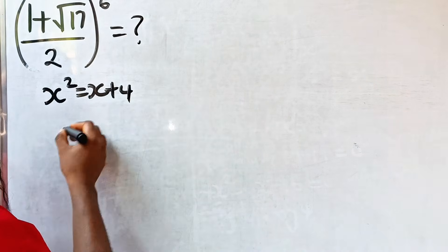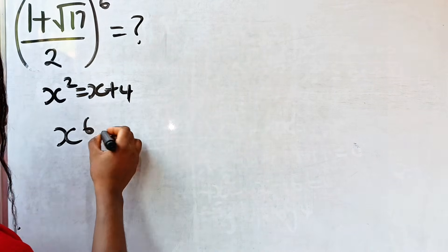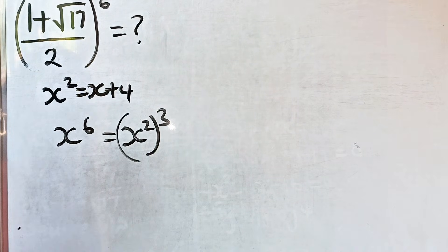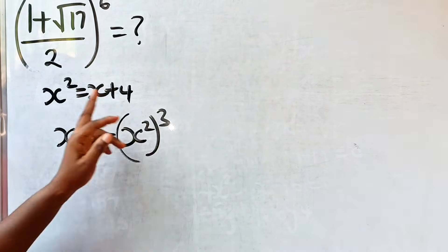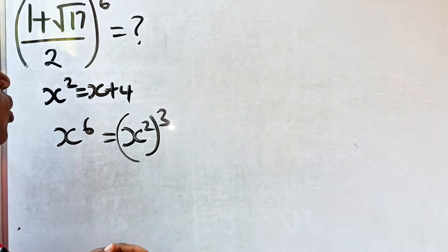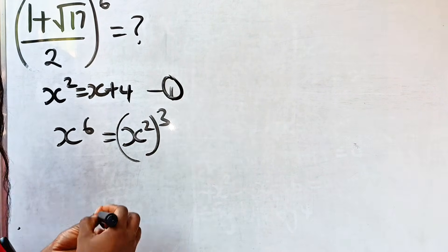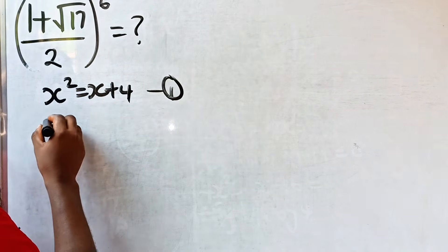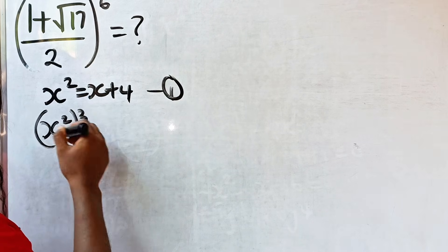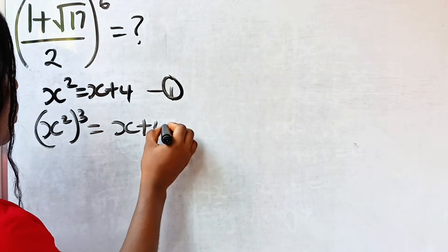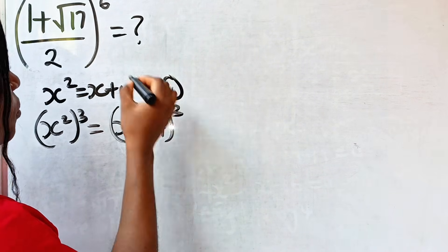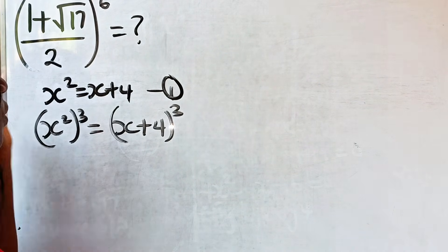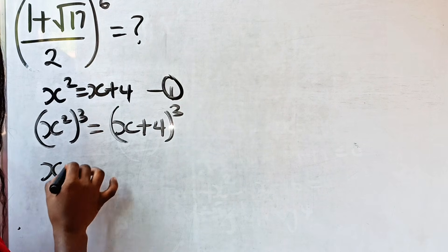Remember that we are looking for x to the power of 6, which equals (x²)³. So in order to achieve that, let us cube both sides of equation 1. We have (x²)³ = (x + 4)³, which gives us x⁶ = (x + 4)³.